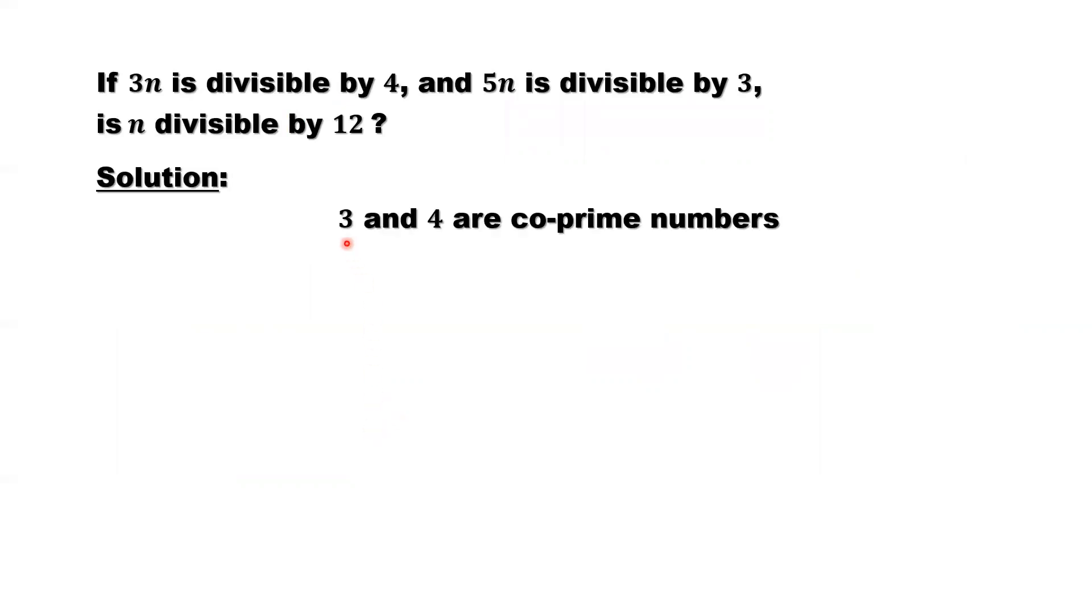Look at this result. 3 and 4 are coprime numbers. What is the definition for coprime? So here 4 is not prime. Two numbers, if they do not have a common factor, we call them coprime numbers. You can see 3 and 4 have no common factors.